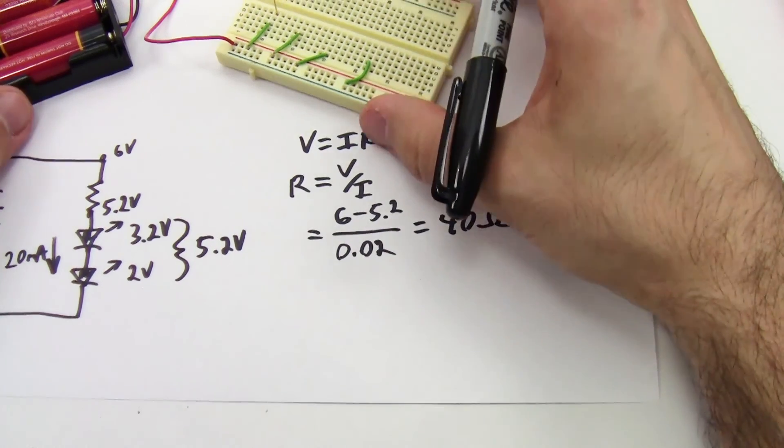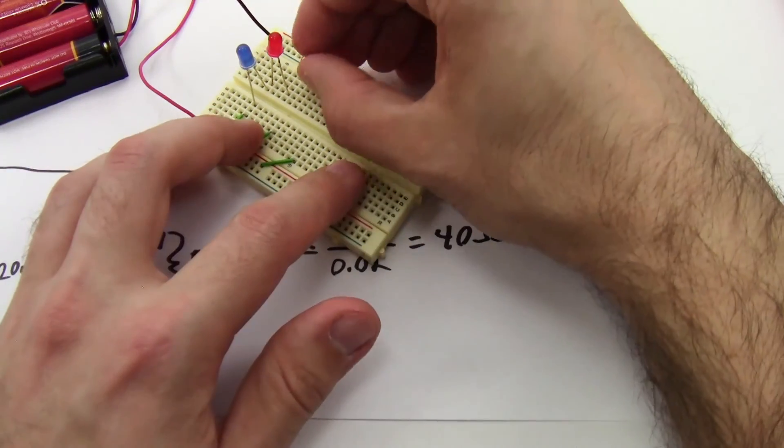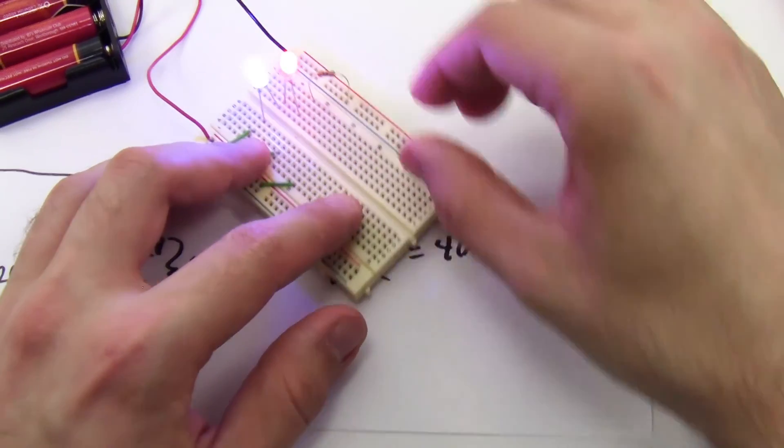As usual, I don't have a 40 ohm resistor, but I'm going to call 47 ohms close enough. And when I plug that in, I will see that both of my LEDs light up.